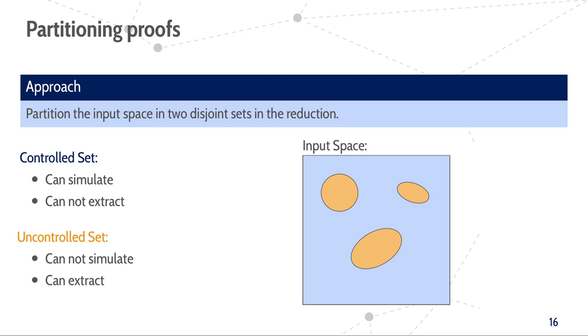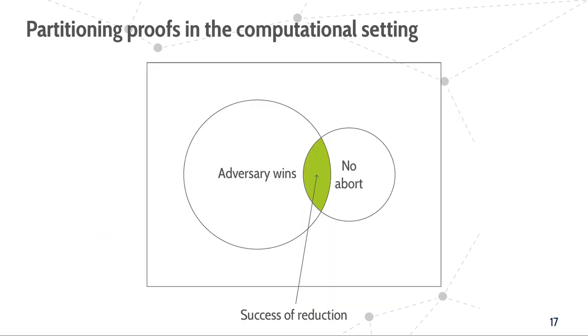This means that for the reduction to be successful, we need the adversary to choose all evaluation queries from the controlled set, but a challenge query from the uncontrolled set. If this is not the case, the reduction can only abort and output a random bit. Indeed, this strategy suffices to prove optimal tightness for unique signatures. The analysis of such a reduction in the computational setting, like for signatures, is straightforward. We only need to show that the probability for the reduction to not abort and for the adversary to be successful is non-negligibly large, here depicted as the green part of the picture.